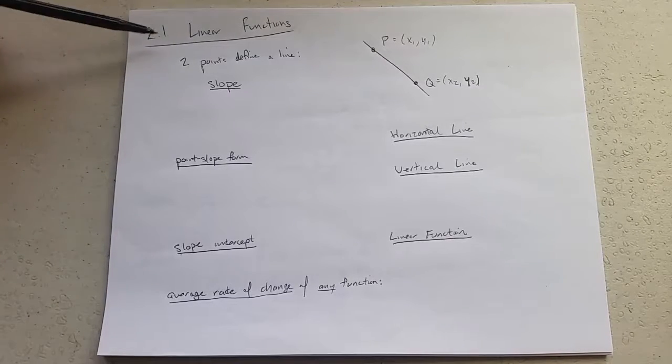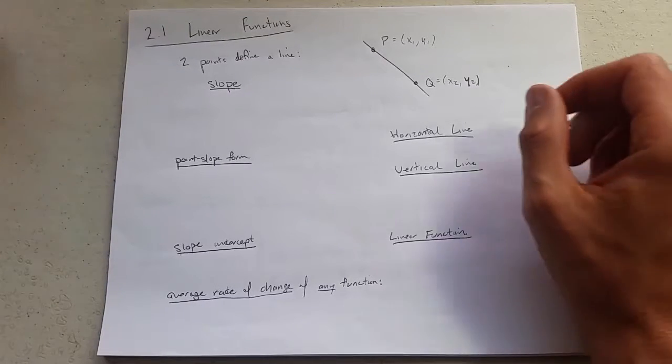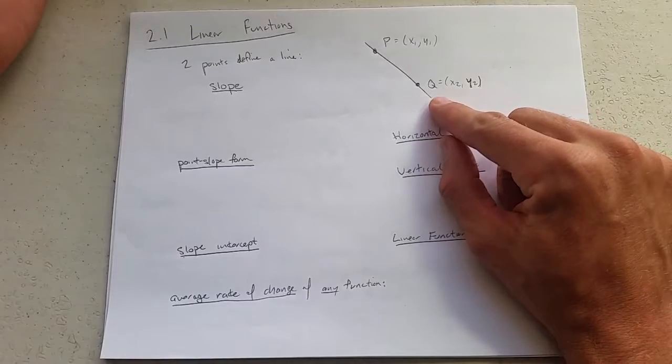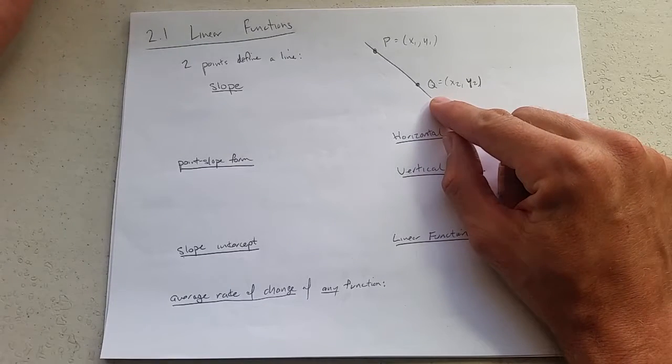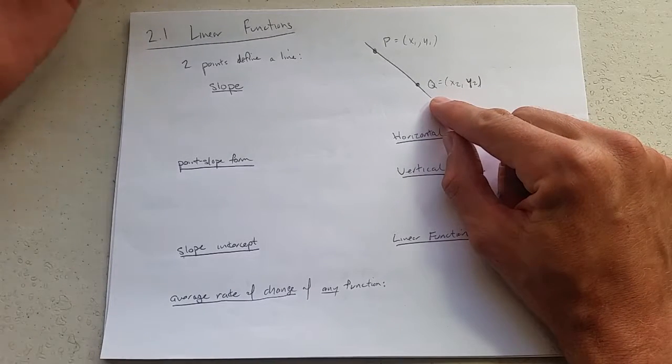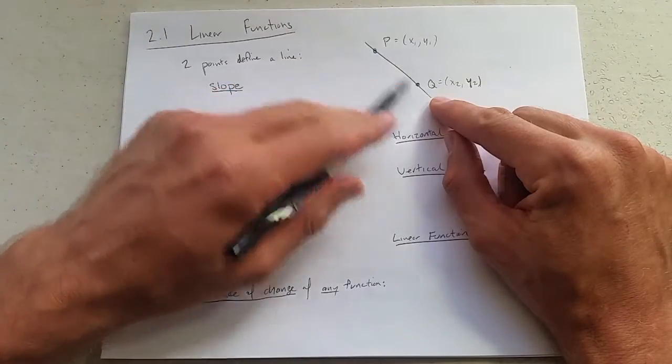Chapter 2.1 is linear functions. And what is a line? Well, a line is a straight object defined by two points.